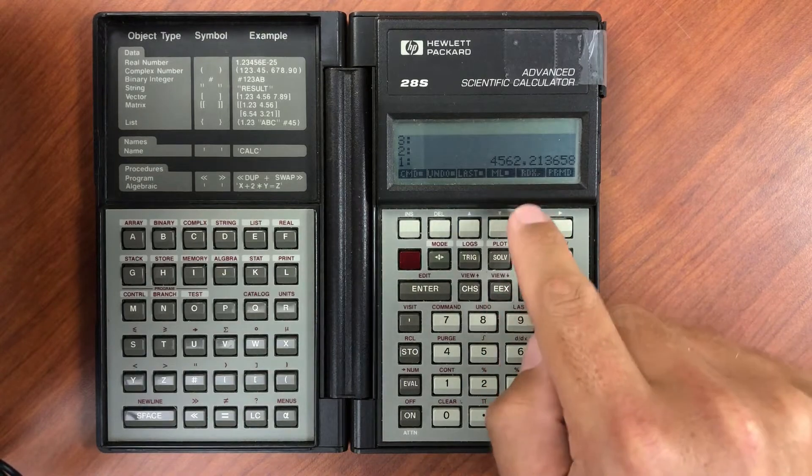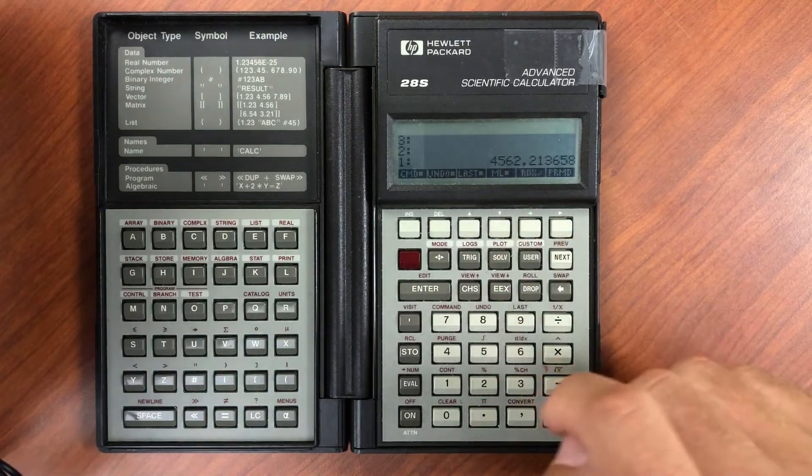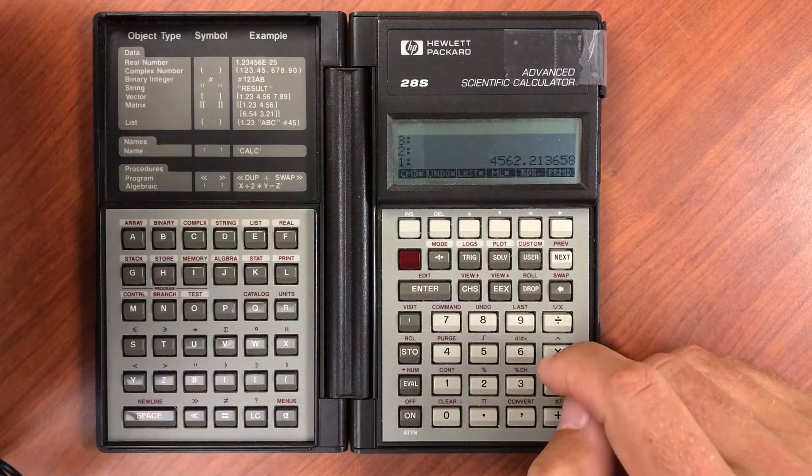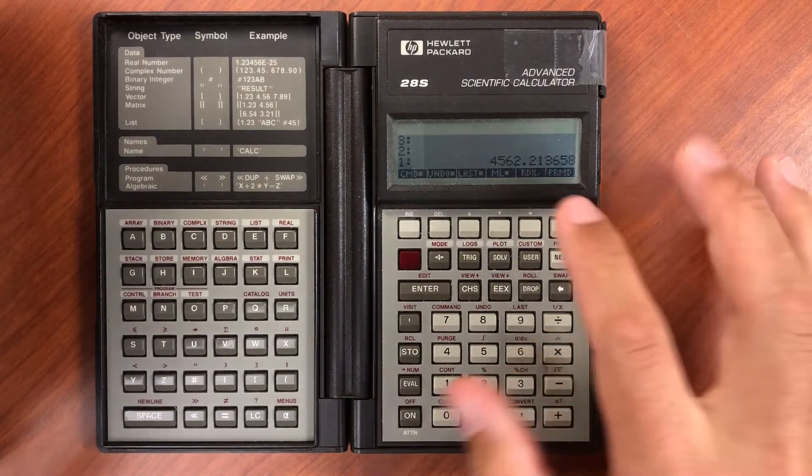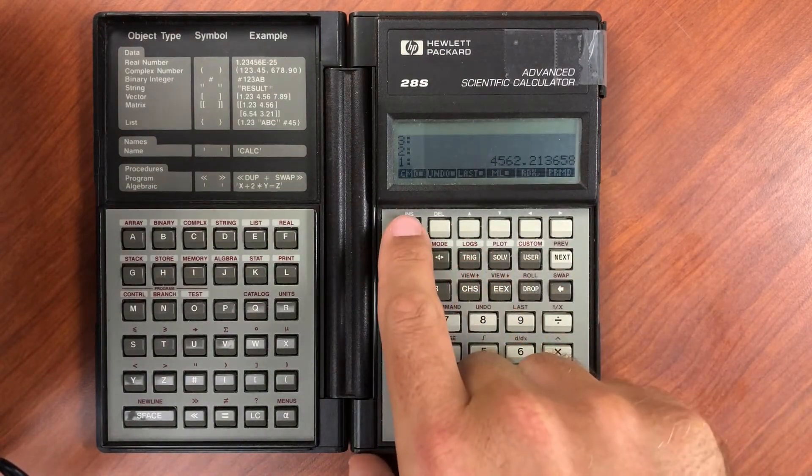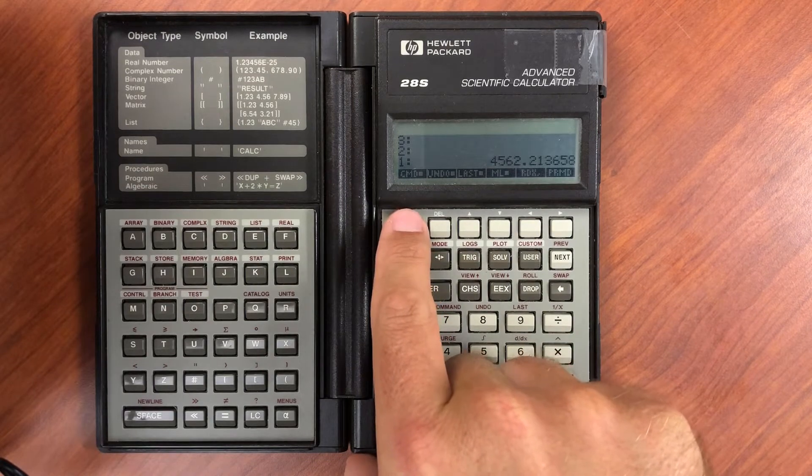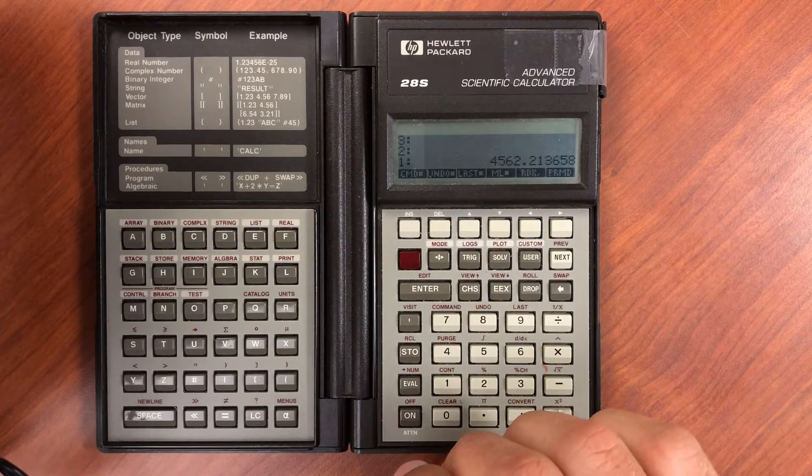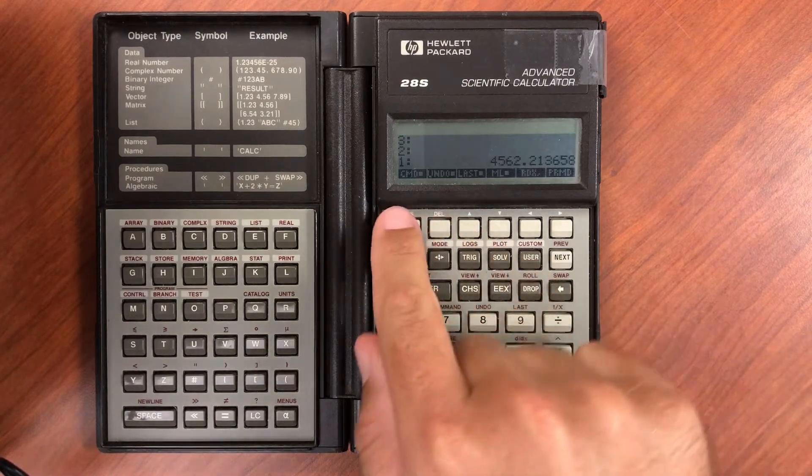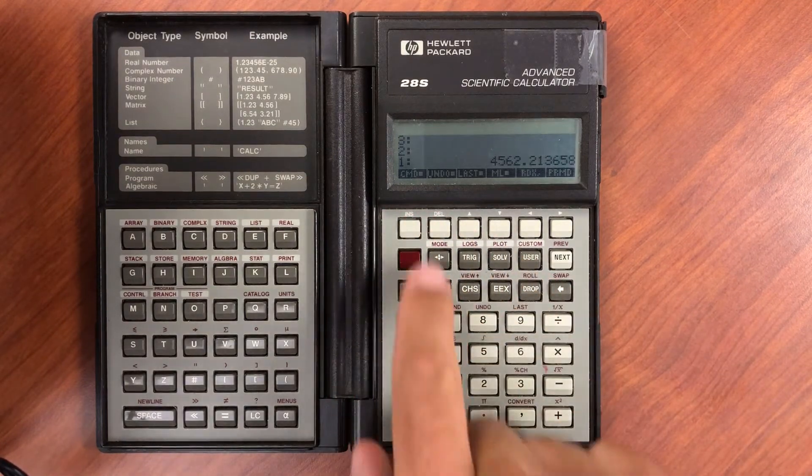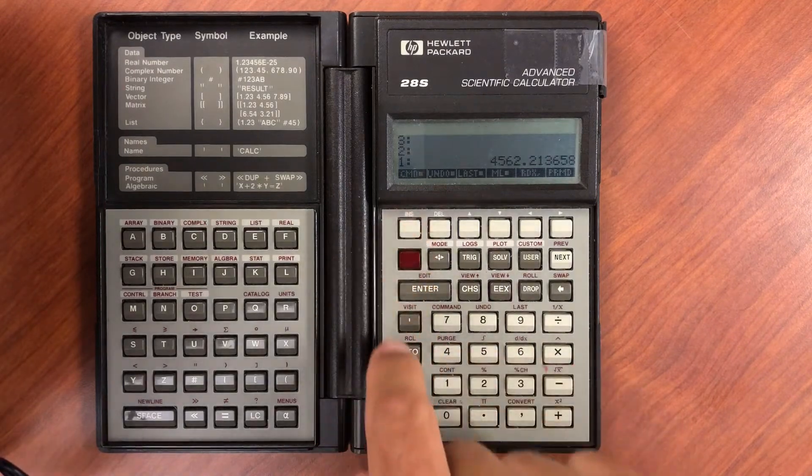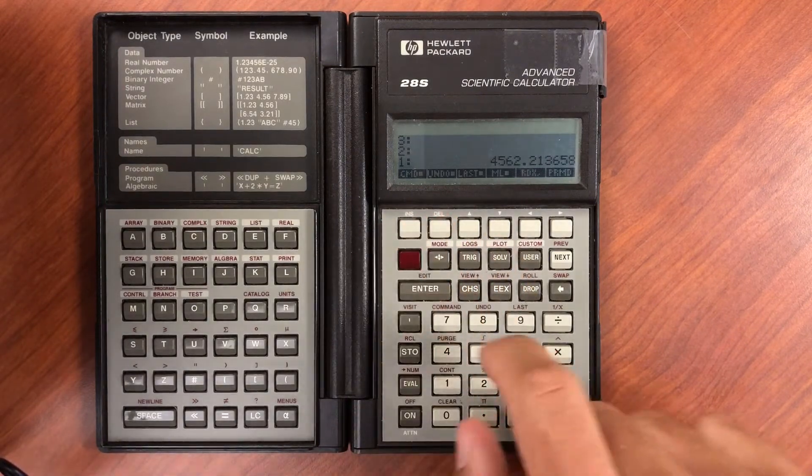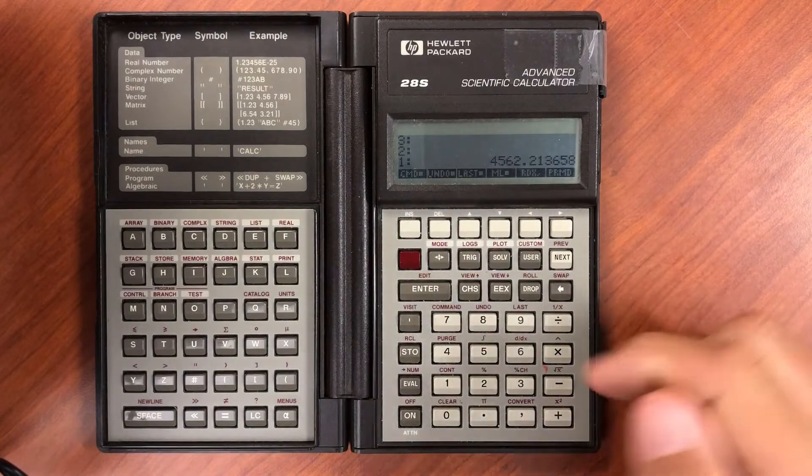You can toggle it between comma or period. These other options here are for various undo functions. You have command, so if you enter in a typed command you can recall it by doing shift command if that is enabled. You can disable it. Undo stores a copy of the stack.